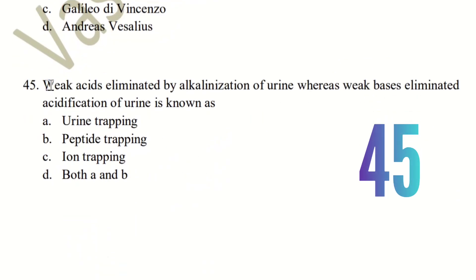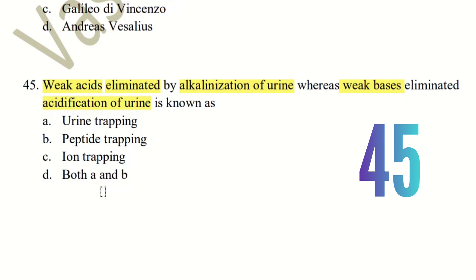Question 45: Weak acids are eliminated by alkalization of urine, and weak bases are eliminated by acidification of urine. This process is known as what? The choices are urine trapping, peptide trapping, ion trapping, and both A and B. The right answer is ion trapping. The manipulation of urine pH to promote excretion of weak acids and weak bases is called ion trapping.